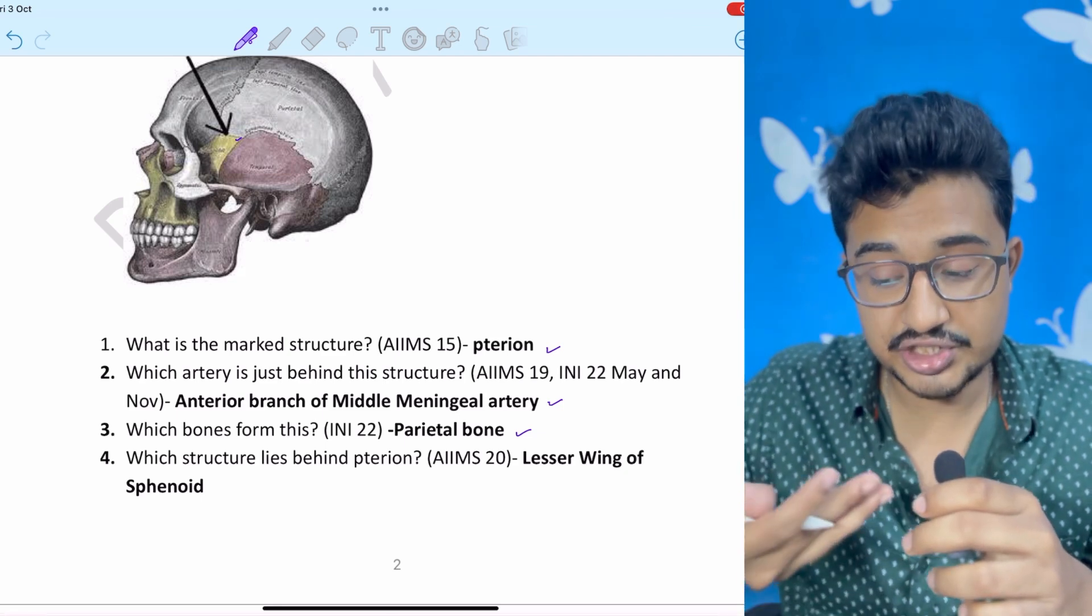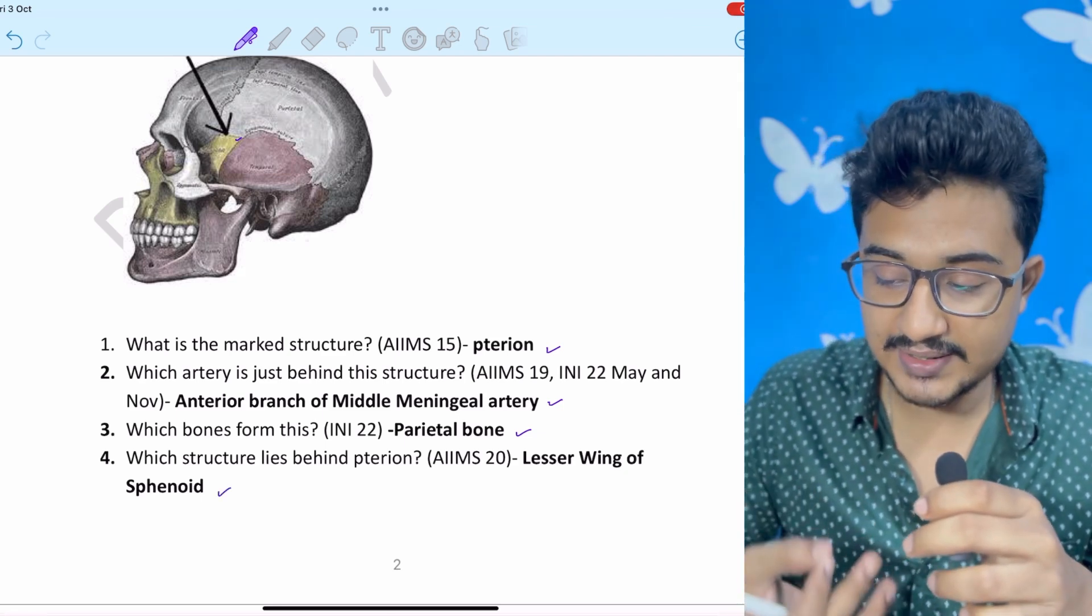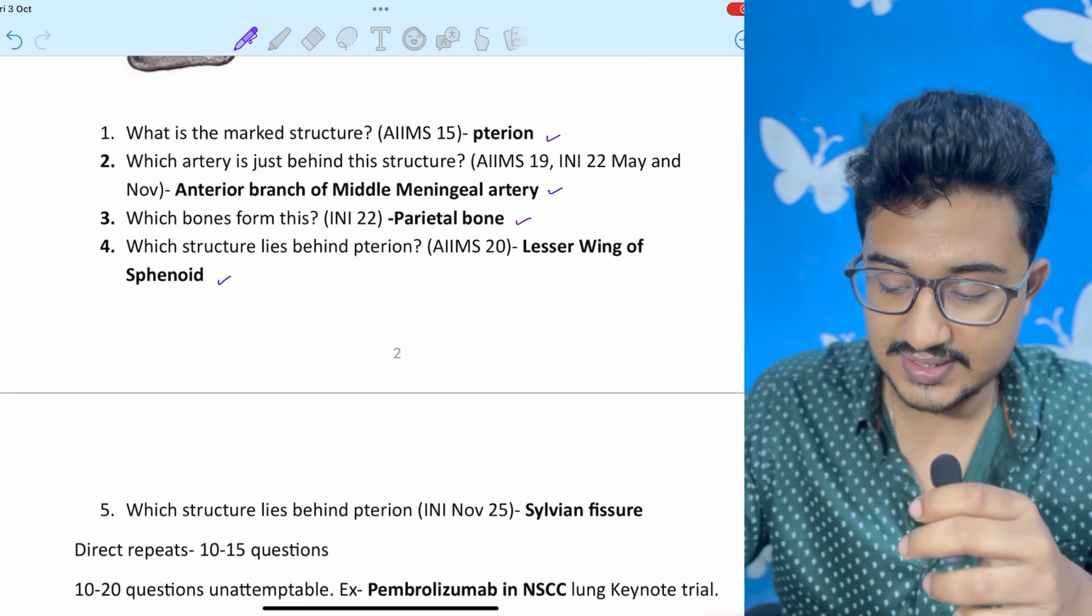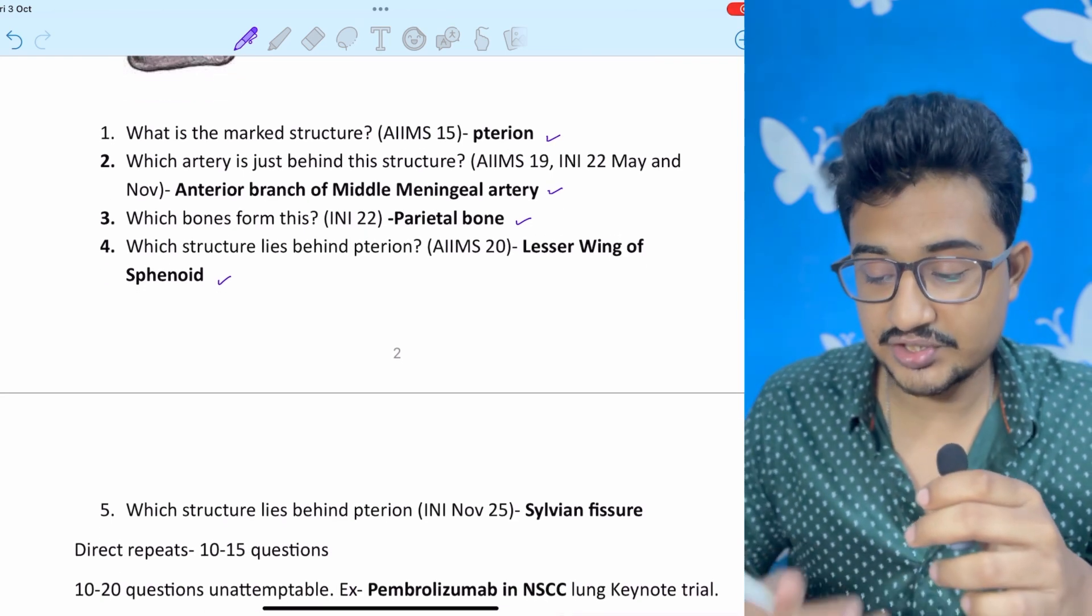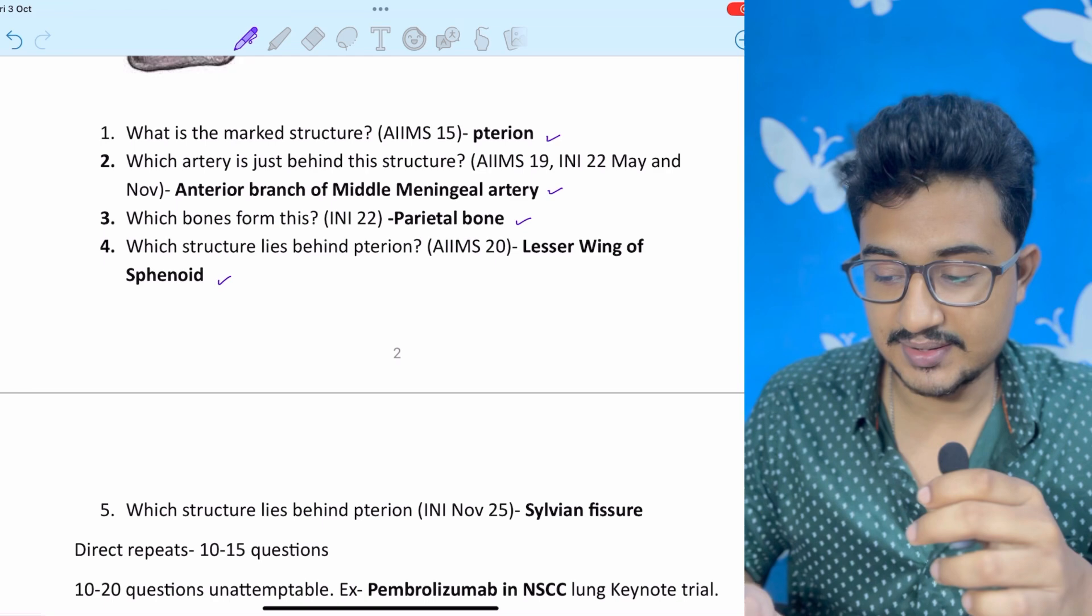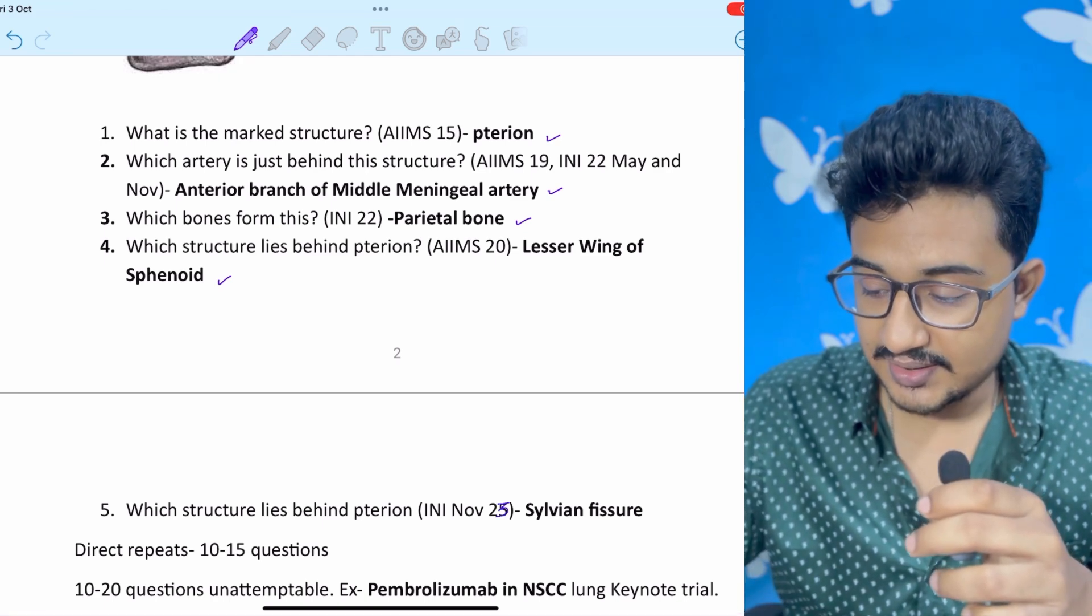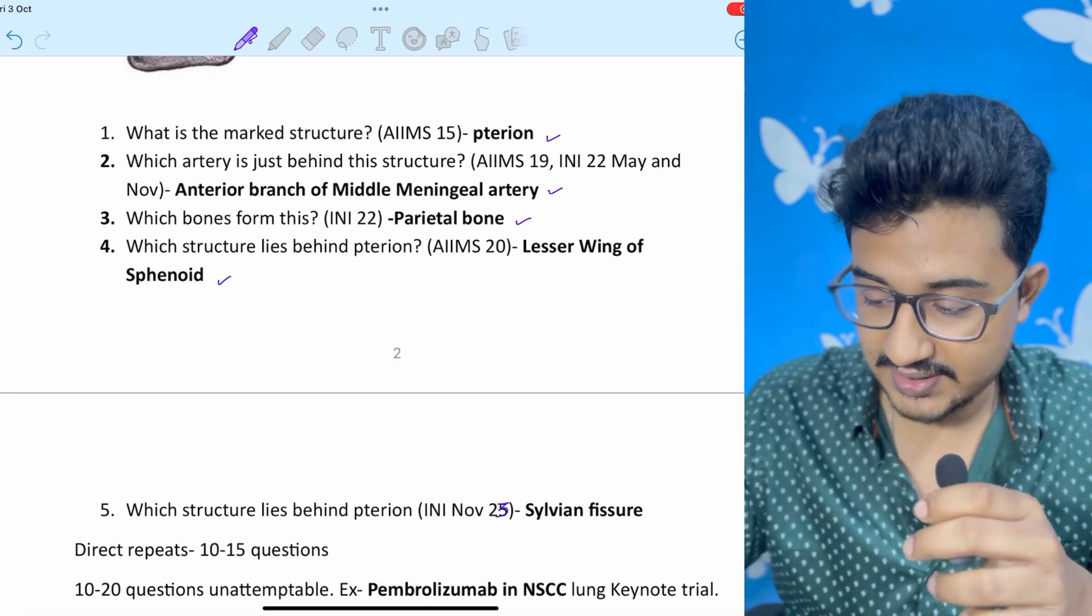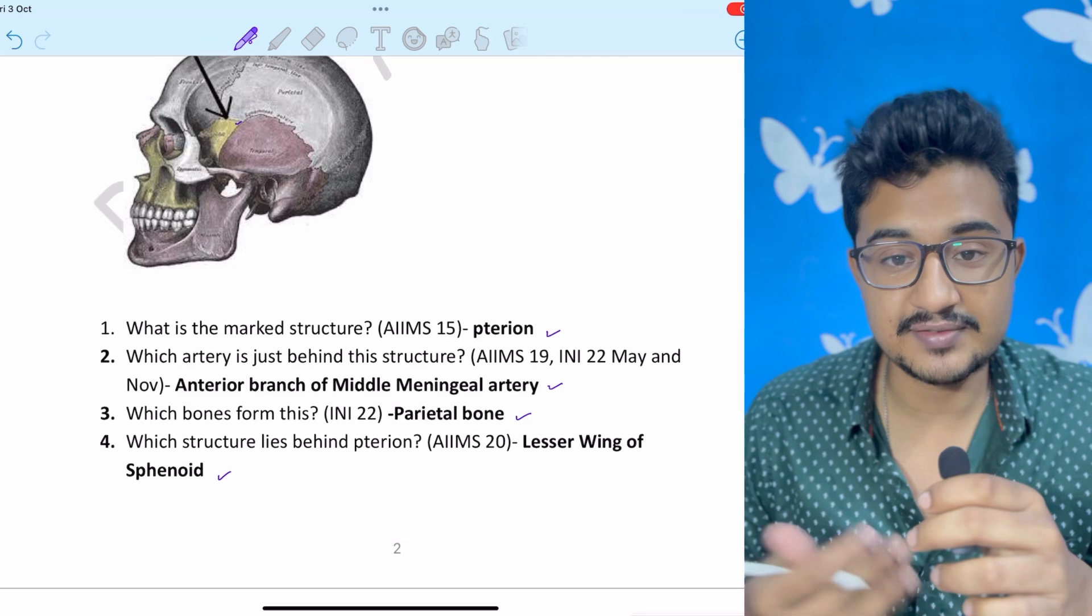Parietal bone was in the option and it was the answer. After that which structure lies behind the terion. And the answer was lesser wing of sphenoid. After that which structure lies behind terion in INICET November 2023. The answer was sylvian fissure.